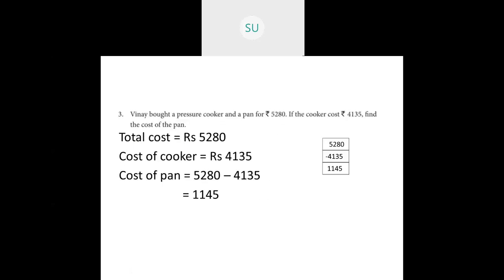Problem 3: a pressure cooker and a pan together cost 5280 rupees. The cooker costs 4135 rupees. What is the cost of the pan? Cost of pan equals 5280 minus 4135 — subtracting gives 1145. The cost of the pan is 1145 rupees.